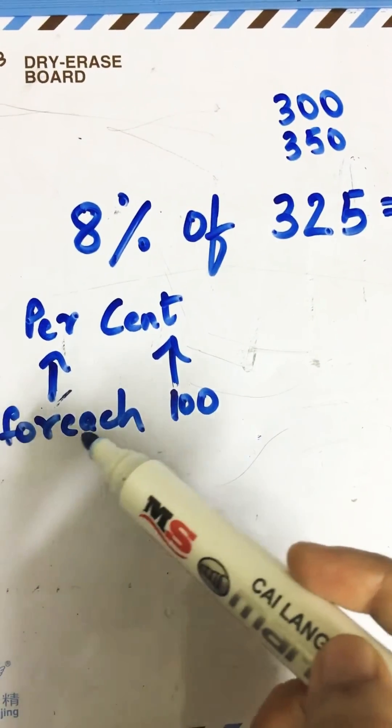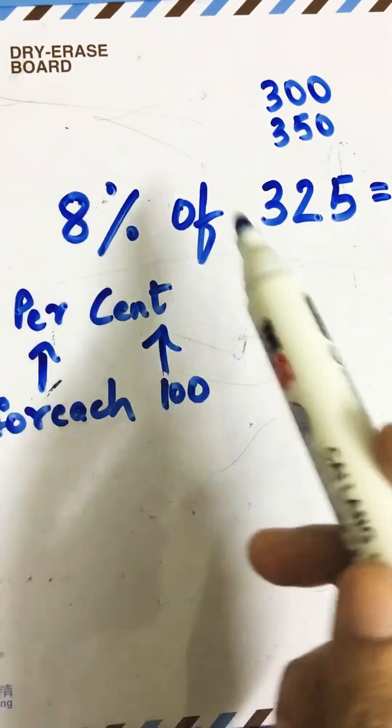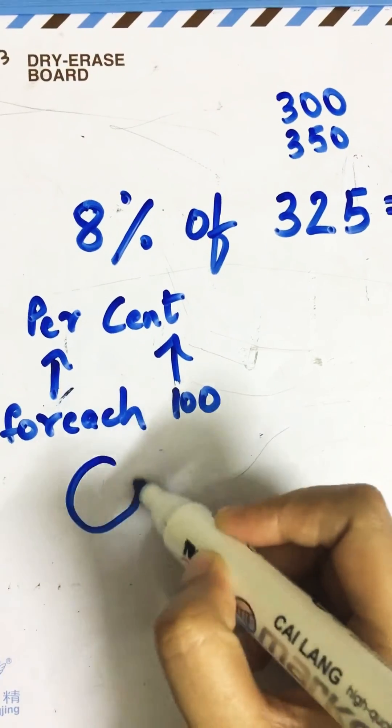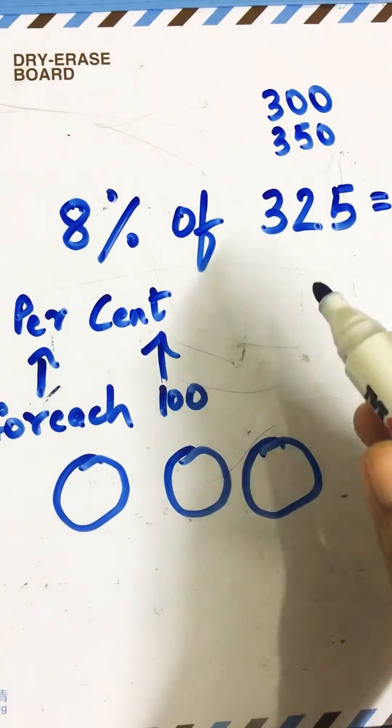Percent means for each cent, which means hundred. So let's see how many hundreds do we have and how many eights do we have in each hundred. Let's draw - we have one, two, three, and one more hundred.